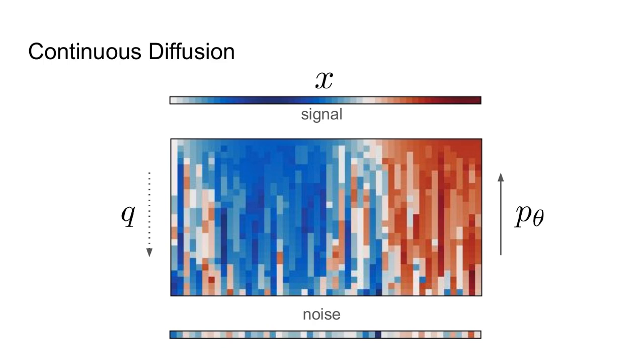We also have a function p theta, which goes upwards, which tries to reconstruct the signal from noise. If we want to take a sample from this distribution, we'll start with the noise at the bottom of the slide, and continue to sample from p theta one step at a time until we reach a full sample x.